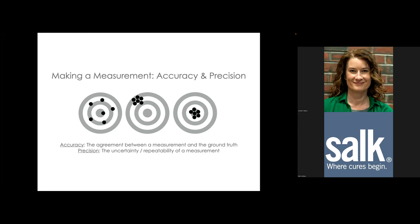Imprecision means when you make a measurement, you can't be confident that any individual measurement is correct. On the left we have an imprecise measurement; in the middle, a very precise but wrong — inaccurate — measurement; and on the right we have both accuracy and precision. Microscopes are a source of both inaccuracy and imprecision.